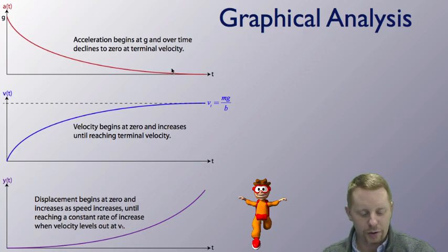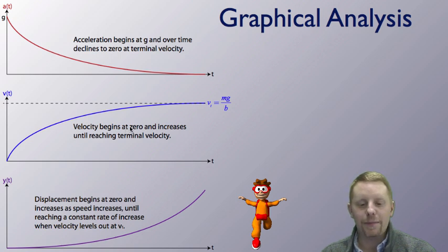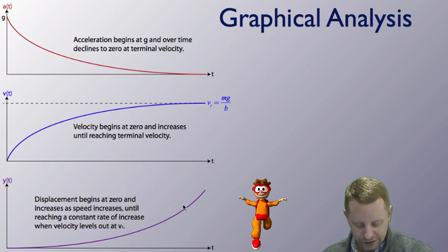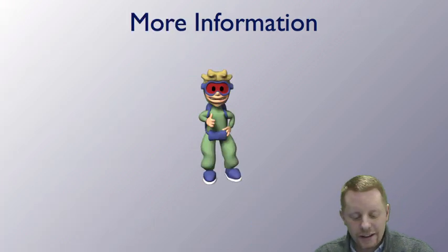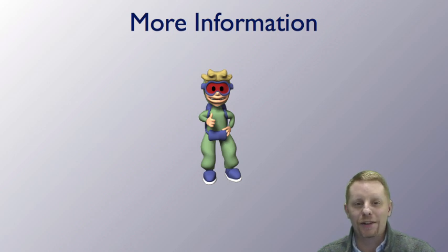So let's see if we can't look at these all together and just recap them one more time. The top one, our acceleration time graph, acceleration begins at g and over time declines to zero at terminal velocity. For the v-t graph, the velocity begins at zero and increases until it reaches terminal velocity. And for displacement, the displacement begins at zero and increases as speed increases until it reaches a constant rate of increase, a constant slope as you get to the terminal velocity. Hopefully that gives you a start on air resistance and terminal velocity. If you need more help or are looking for more information, check out aplusphysics.com. Thanks, everyone. Make it a great day.